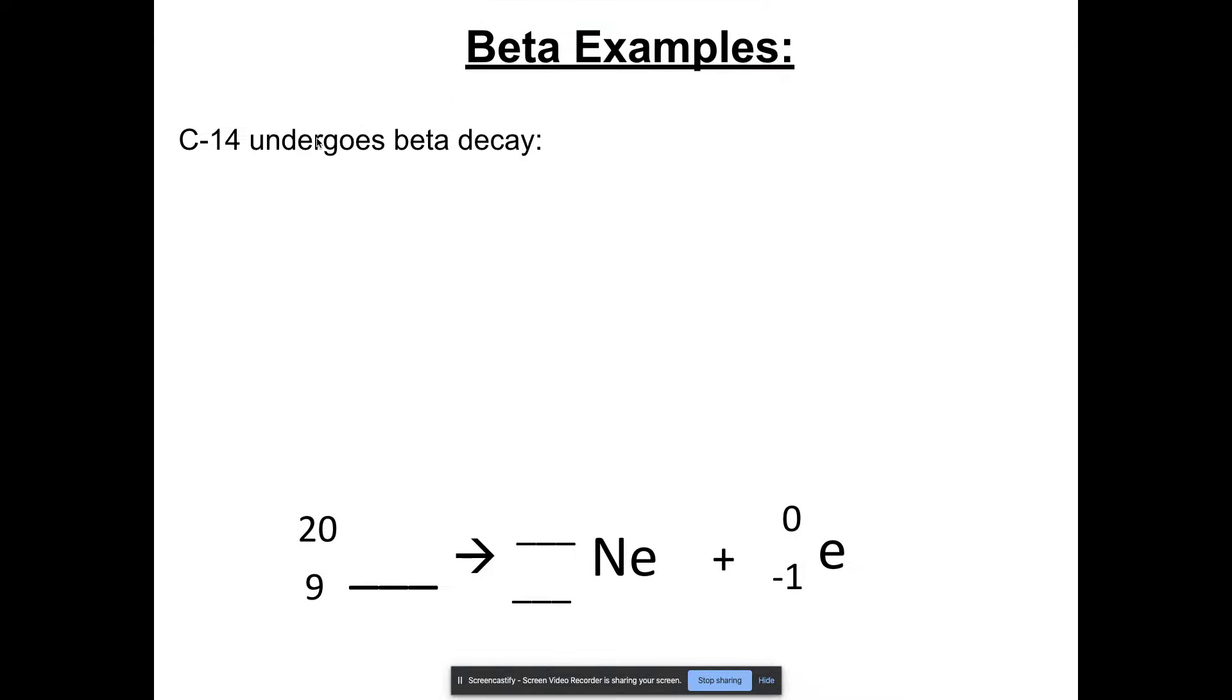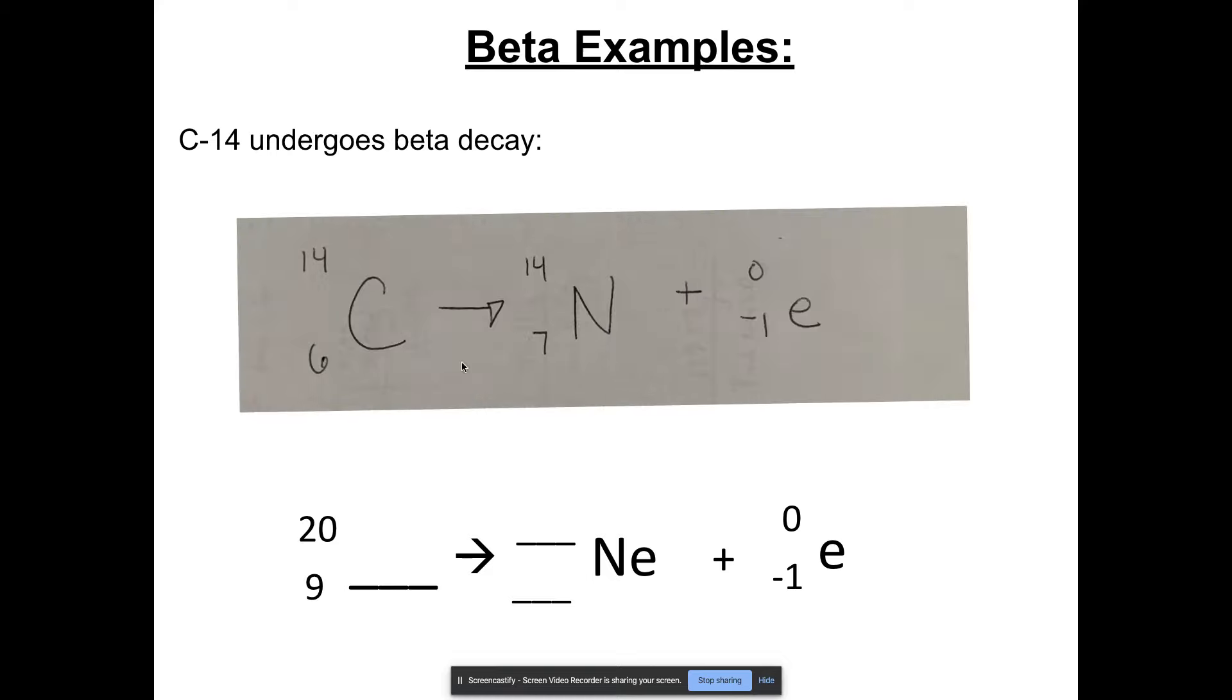Let's do a beta decay example. So again, C-14 undergoes beta decay. Try writing that in atomic notation, and then see what your result would look like. Pause the video. All right, here we go. We've got C-14. Again, mass number not changing, but the atomic number is going up by 1, which means I'm making nitrogen-14.